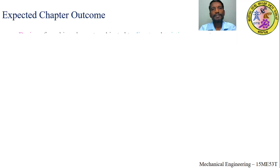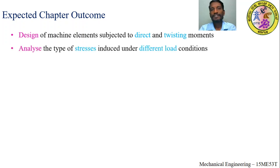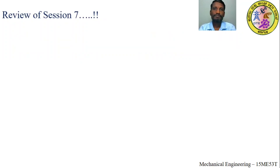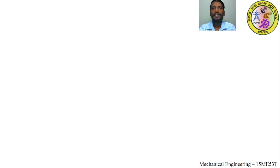Chapter outcome number 1: design of machine elements subjected to direct and twisting moments. Number 2: analyze the types of stresses induced under different load conditions. Coming to the review of the 7th session, we covered keys and types of keys, and after that we went for MCQs — that is, a test.